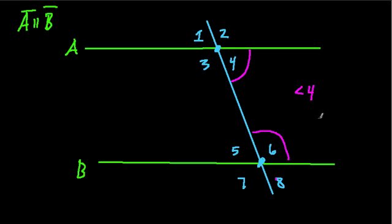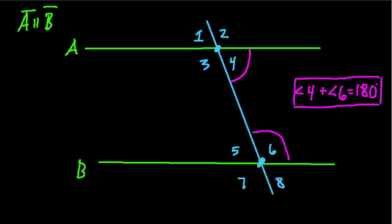So if they're on the same side, and they're interior angles, and we're cutting parallel lines with a transversal, then they add up to 180 degrees. They're supplementary. And we'll look at why in a moment.